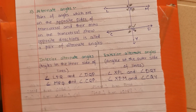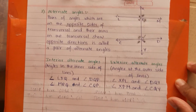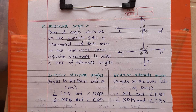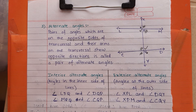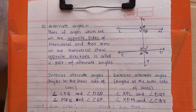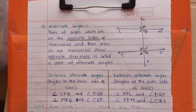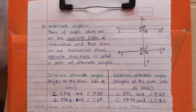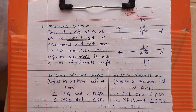So these are your alternate pair of angles. Understood all the pairs of angles? In the next lecture we will see practice set 2.1. Till then, if possible watch this video once again so that you can make things clear in your mind — what are parallel lines, what is transversal, and what are the three pairs of angles: corresponding, interior, and alternate. Thank you.